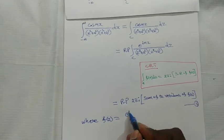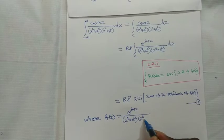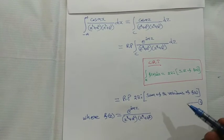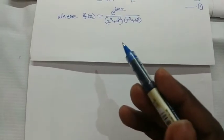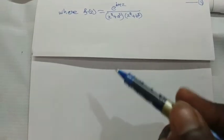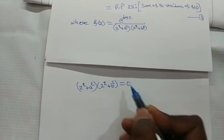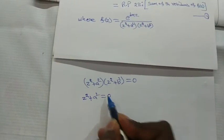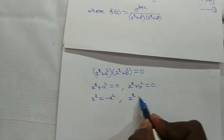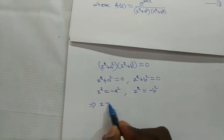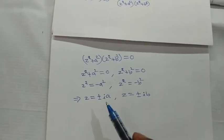Here f(z) = e^(imz) divided by (z² + a²)(z² + b²). To find the residues, first find the poles by setting the denominator to zero: (z² + a²)(z² + b²) = 0, which gives z = ±ia and z = ±ib. There are four poles in total.